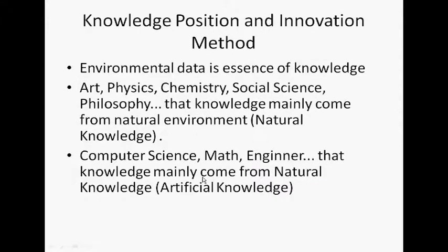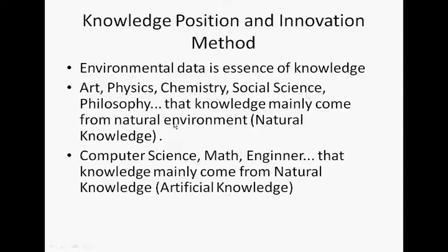For my Knowledge Theory, there are three levels: Environment Data Level, Nature Knowledge Level, and Artificial Knowledge Level. Environment Data is just data existing in the environment — it can be unknown or learned data. Nature knowledge is human-derived from the natural environment. Artificial knowledge is learned from nature knowledge or the self. Sometimes I call it secondary knowledge as well.